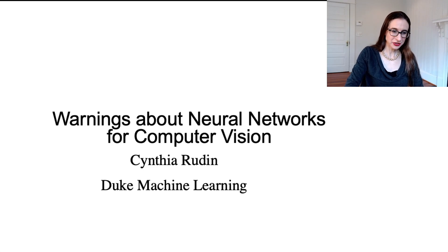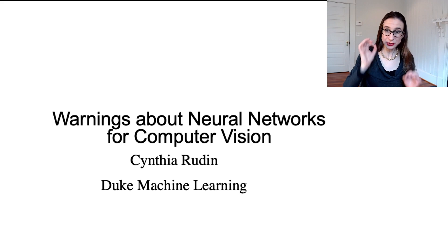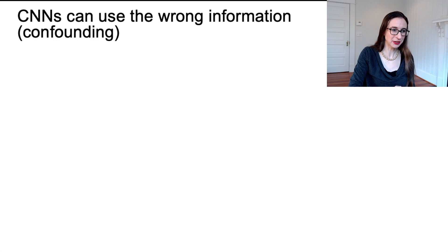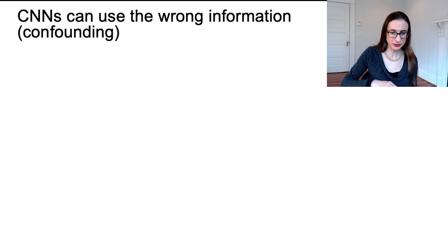Before I finish our lectures on neural networks, I need to give you some warnings about their use in computer vision, because they don't see things the same way that humans see them. They're very, very different. And in particular, confounding can be quite bad in neural networks for computer vision.